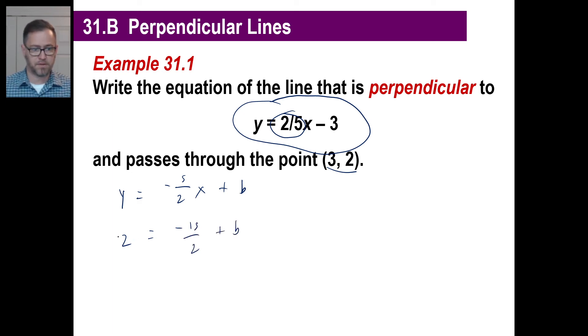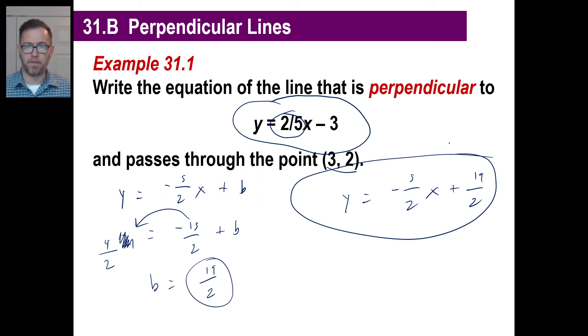Now that's, again, go ahead and rewrite this 2 as something with, we'll do a 2 as our denominator, so 4 over 2. So this goes over here. That becomes positive 15 over 2. So b is equal to 4/2 plus 15/2 is 19/2. So this is our equation. y equals negative 5/2 x plus 19/2. And there we go. And that's it. So same old kind of thing. The only thing different you have to know is perpendicular lines have negative reciprocal slopes, and you got it.